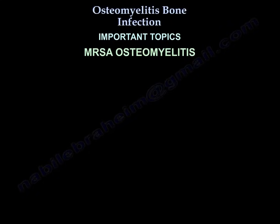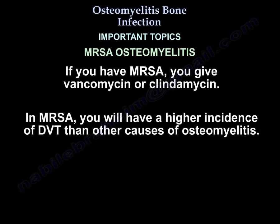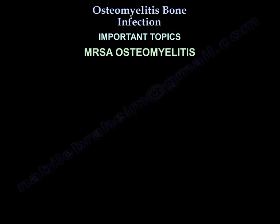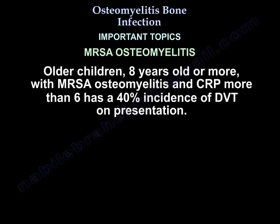If MRSA is identified, give vancomycin or clindamycin. MRSA osteomyelitis has a higher incidence of DVT than other causes. Older children eight years or more with MRSA osteomyelitis and CRP more than 6 have a 40% incidence of DVT on presentation.